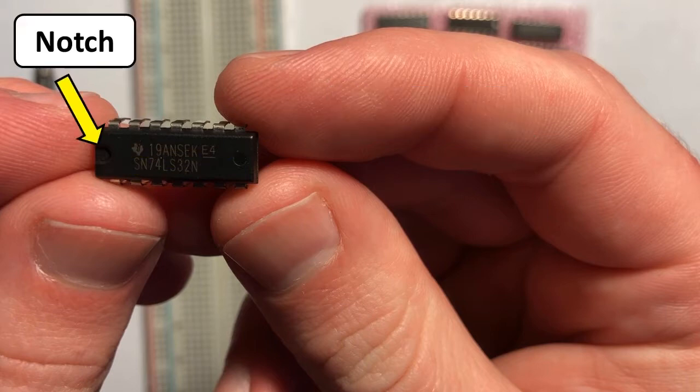Another thing to notice about the IC is that one side will always have a notch or a little circle, and this is to help us orient the IC.